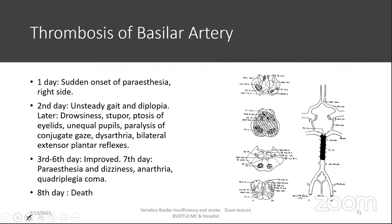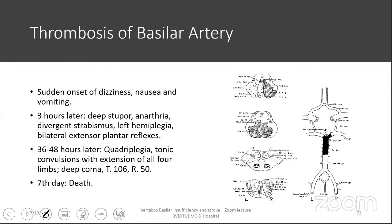Case 2: sudden onset of dizziness, nausea, and vomiting; three hours later deep stupor, anarthria, divergent strabismus, left hemiparesis, extensor plantars bilaterally; by day one and a half to two — quadriplegia, tonic extension of all four limbs, deep coma, high temperature, and death. Signs included bilateral constricted pupils, hyperreflexia — all pointing to the pontine region. This brings us to the brainstem vascular syndromes of the midbrain, pons, and medulla: Weber's, Benedict's, Claude's, Nothnagel's in the midbrain; Millard-Gubler and Foville in the pons; ventral pontine syndrome; Marie-Foix; Wallenberg; Dejerine-Sotter syndrome.